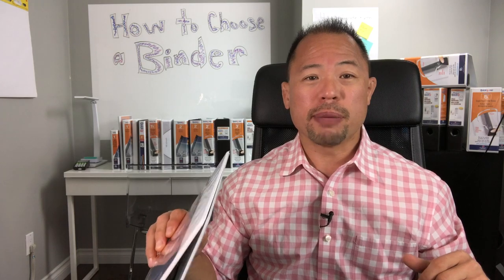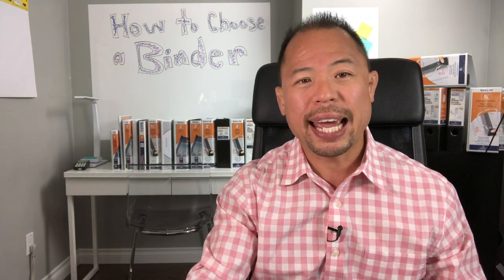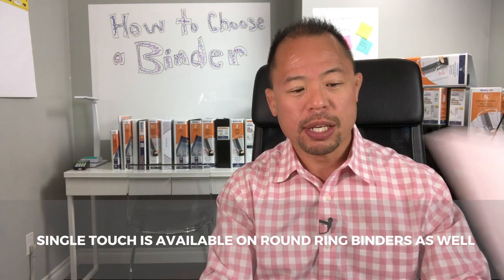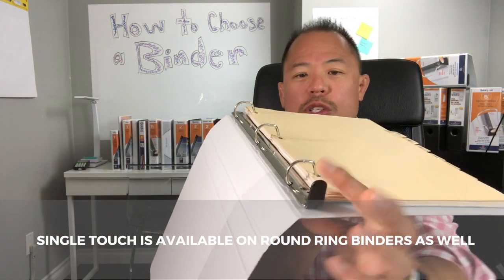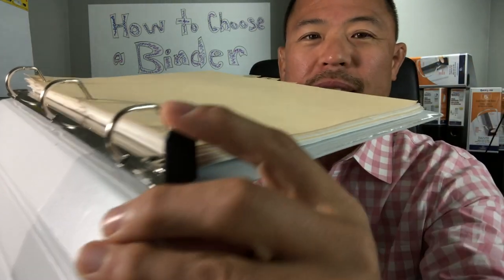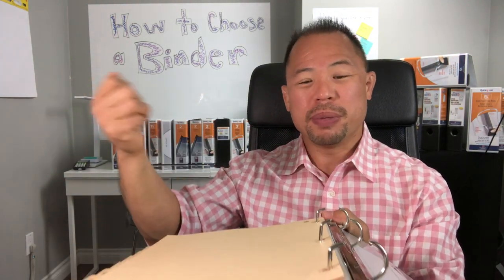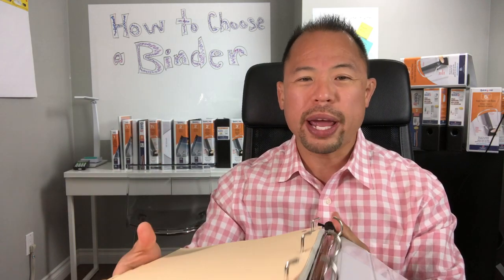But if you're going to be referring to documents a lot — say you're in the legal industry or developing a training manual where things constantly change — you'll probably want to consider a single touch mechanism. That single touch mechanism looks like this: just one touch, and look how smooth that works. The benefit is that if you're inserting a lot of documents, you can do it with one hand. It's way more efficient than the traditional open-and-close mechanism. Over time, that will save you a lot of time, and time equals money.